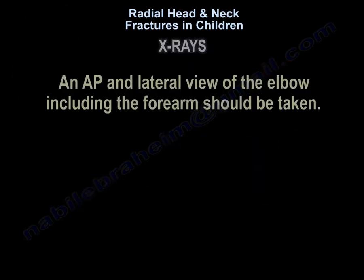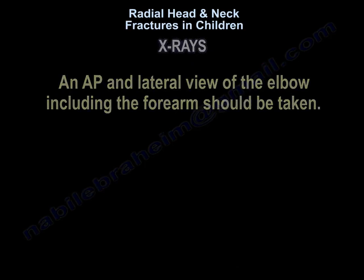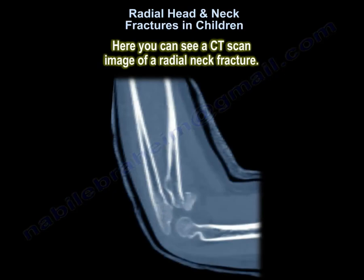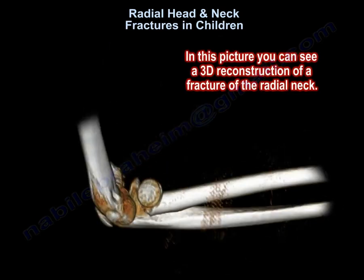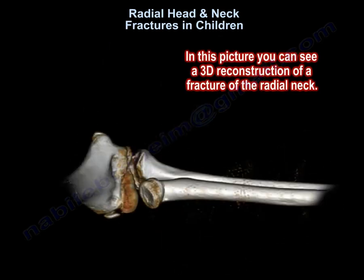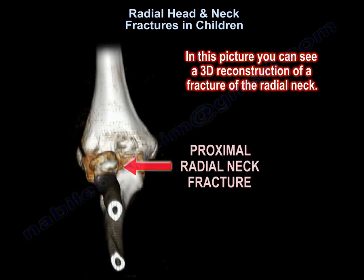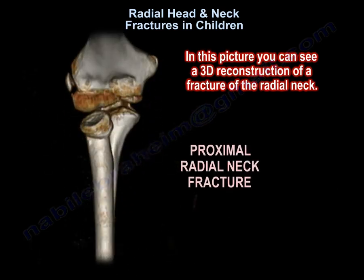An AP and lateral view of the elbow, including the forearm, should be taken. Here there is a CT scan image of a radial neck fracture. In this picture, you can see a 3D reconstruction of a fracture of the radial neck.